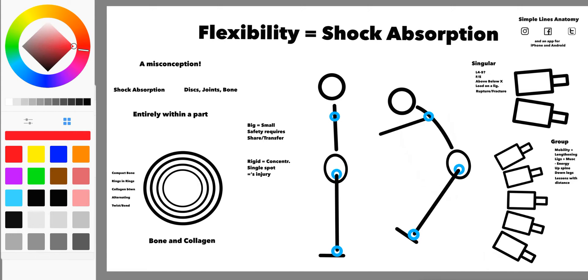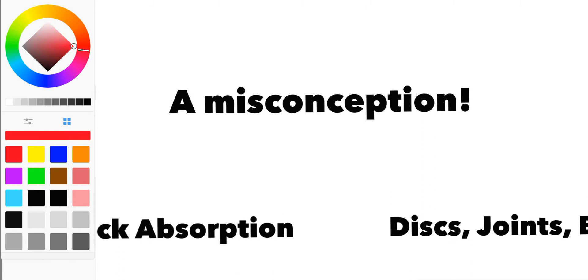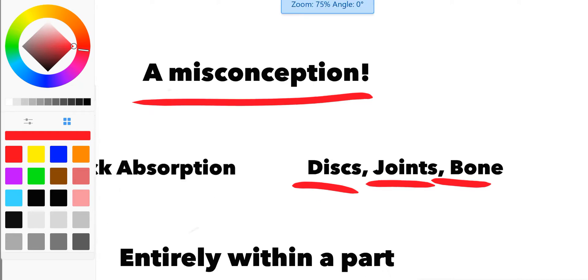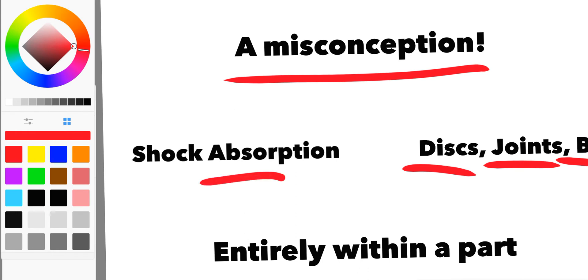When it comes to movement, there's often a misconception in the body that certain parts—maybe your discs, your joints, especially the synovial ones, and the bone—have the capacity for shock absorption. There's a misconception that they take it on completely within that part and dissipate it within that part.